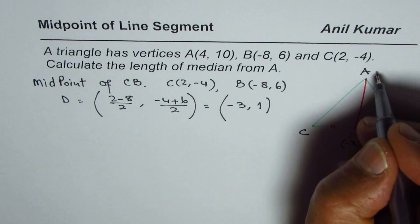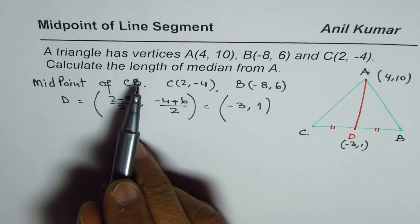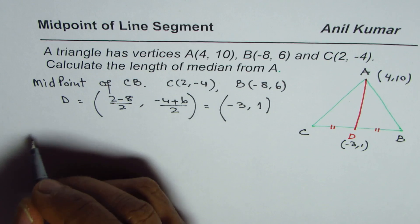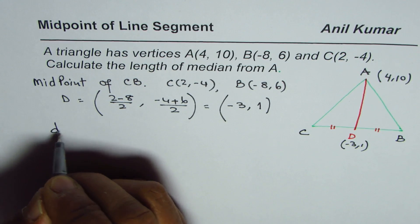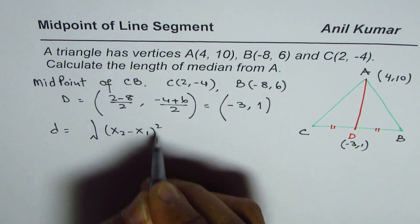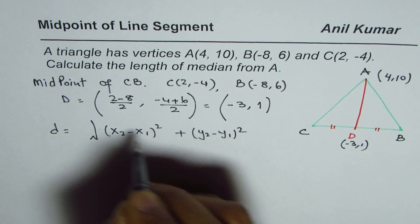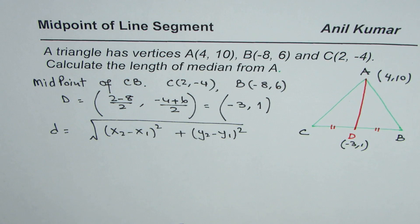We are given coordinates of point A which are (4,10). Now to calculate the median we will apply the distance formula: D equals square root of (x2 minus x1) whole square plus (y2 minus y1) whole square.